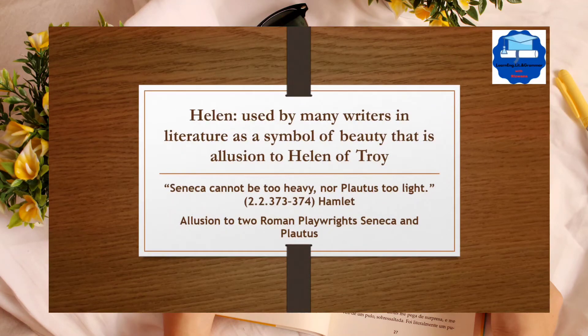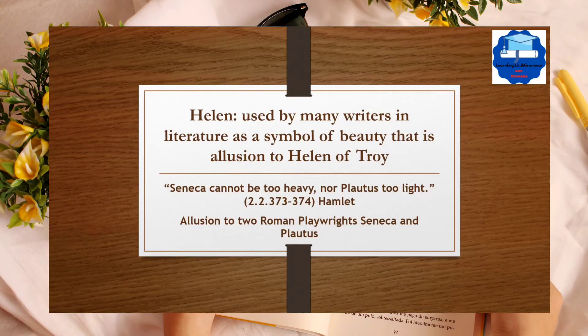In Hamlet, Shakespeare has used this technique very beautifully: 'Seneca cannot be too heavy nor Plautus too light.' This is an allusion to two Roman playwrights, Seneca and Plautus.